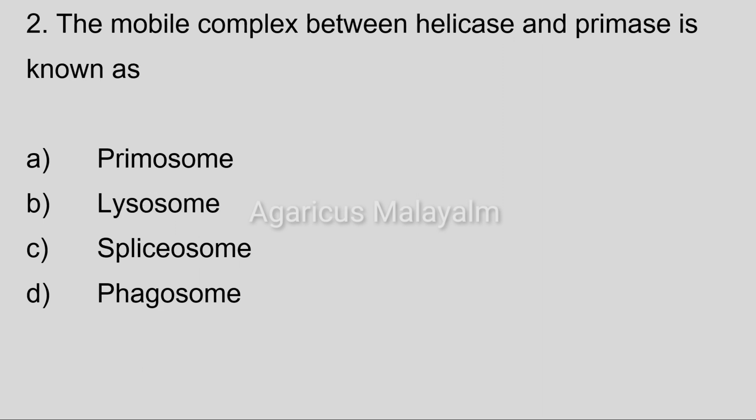Second question: The mobile complex between helicase and primase is known as? Option A: Primosome. Option B: Lysosome. Option C: Spliceosome. Option D: Phagosome. Correct answer: Option A, Primosome.